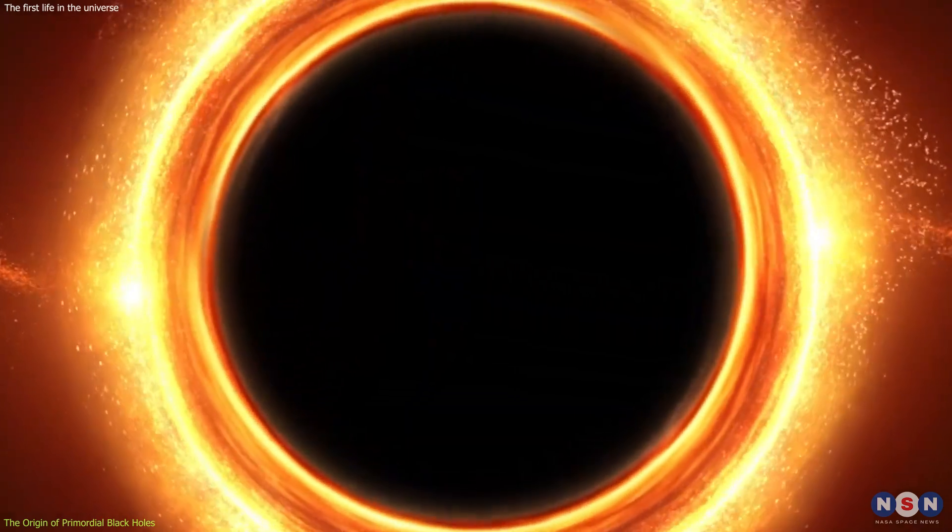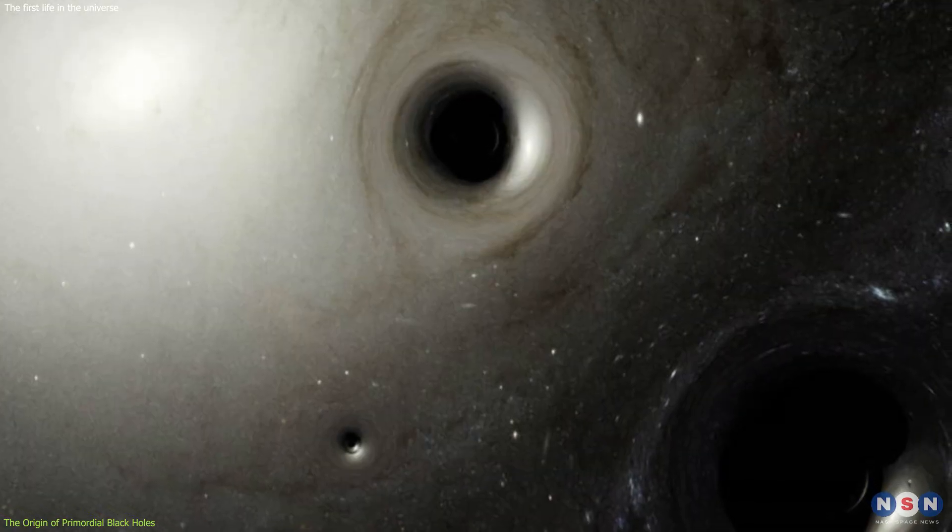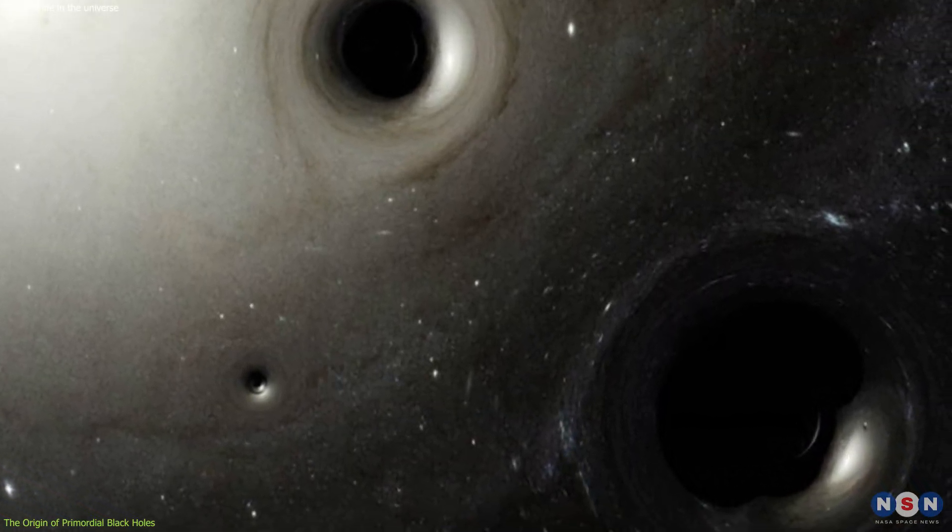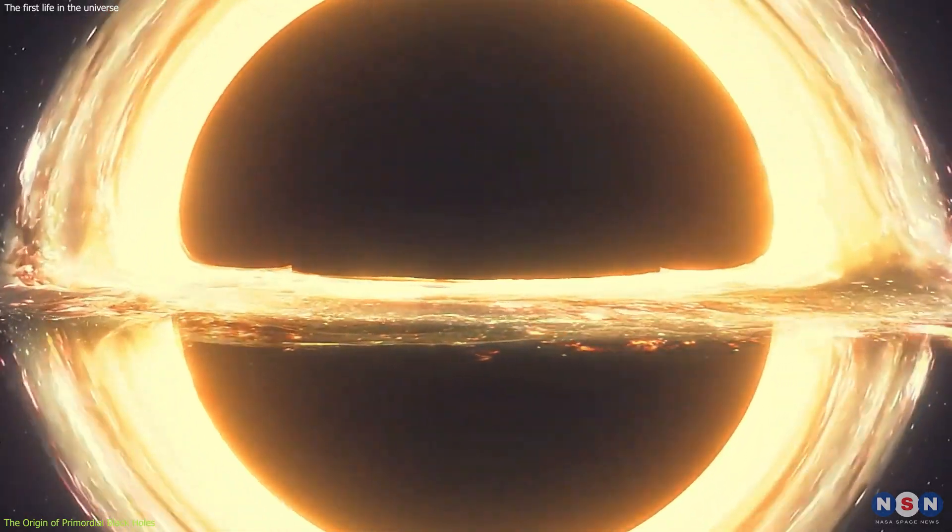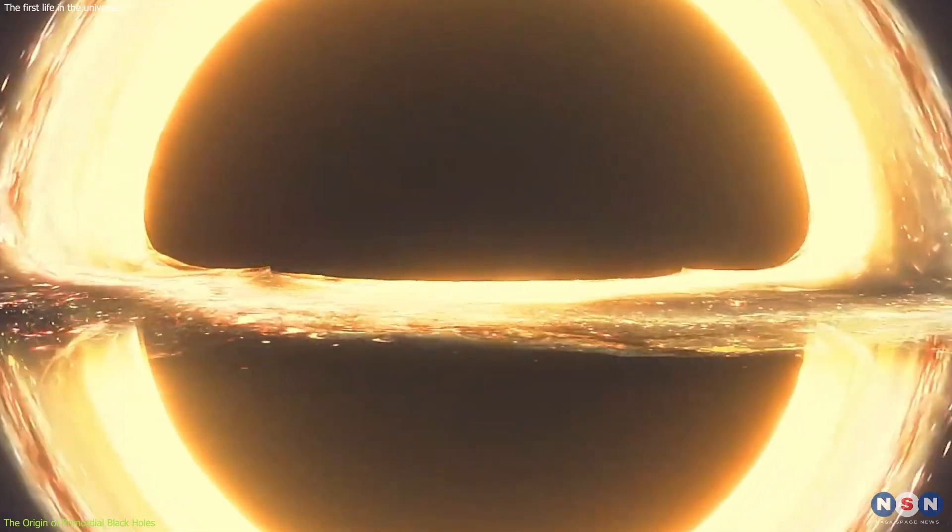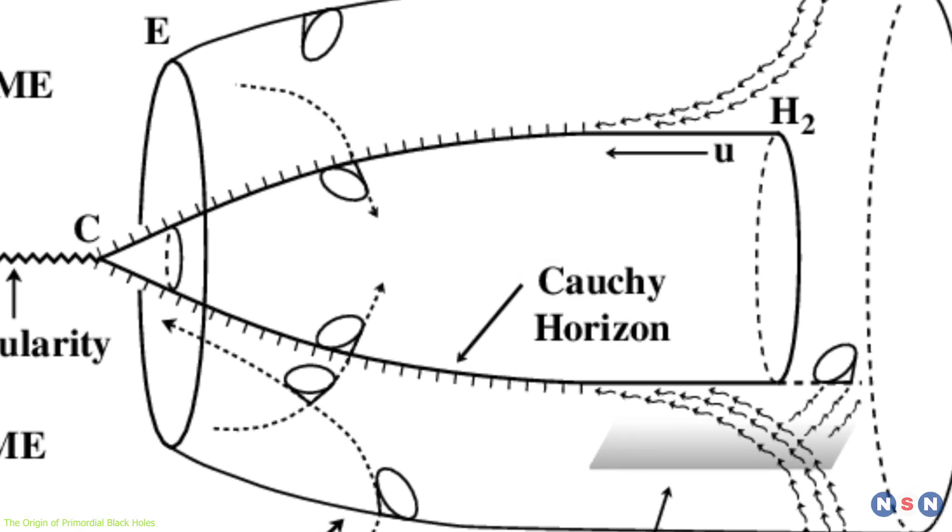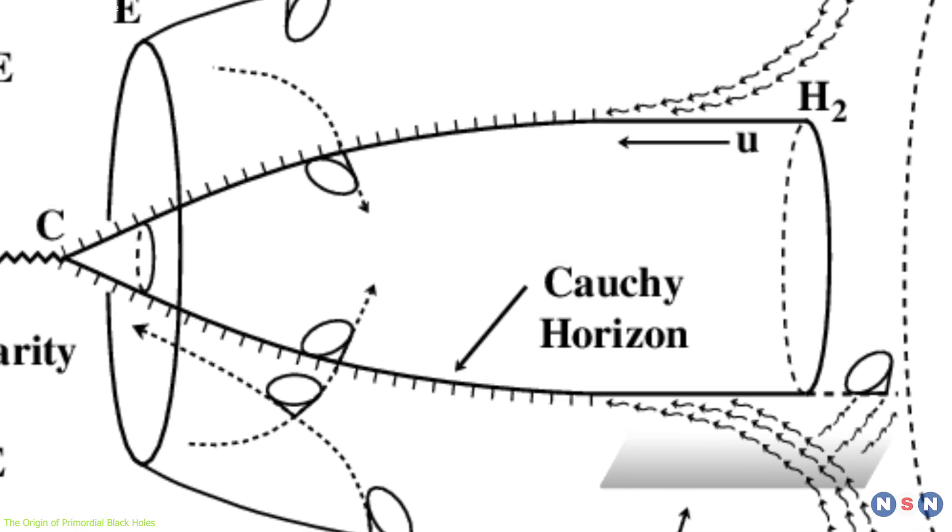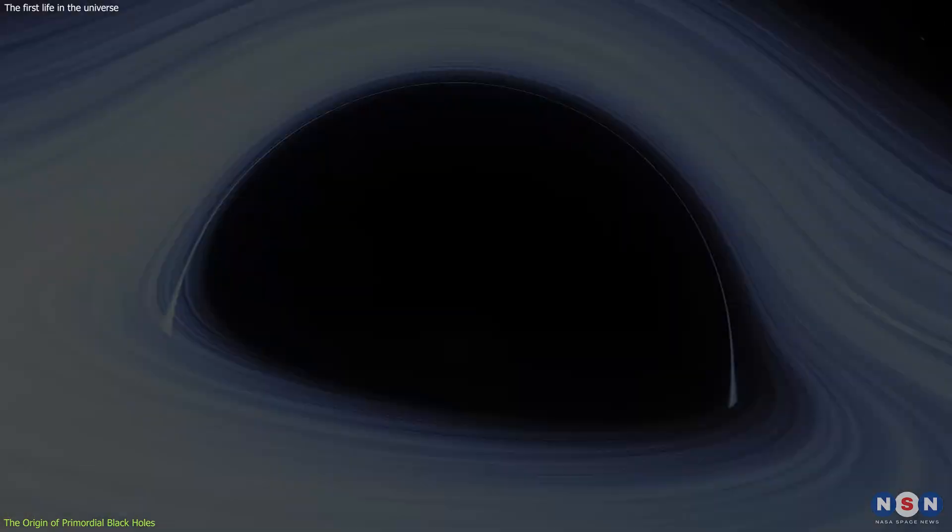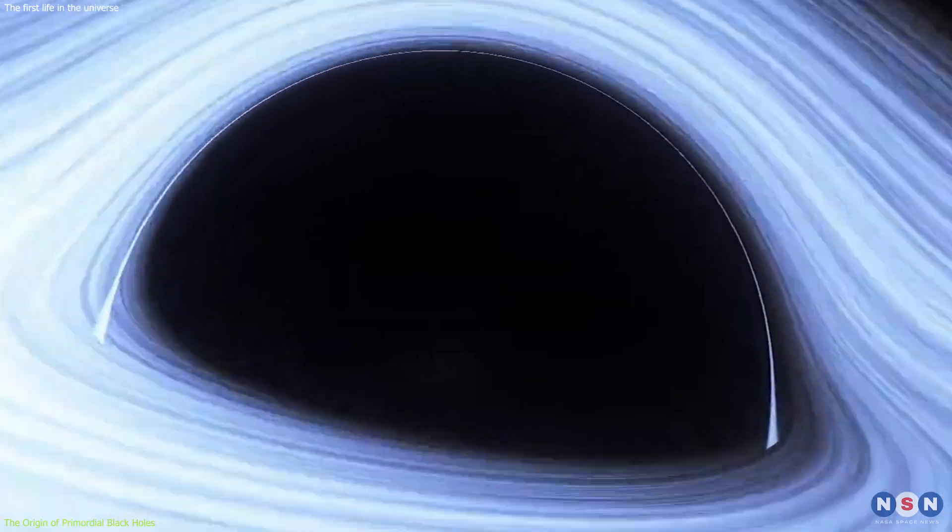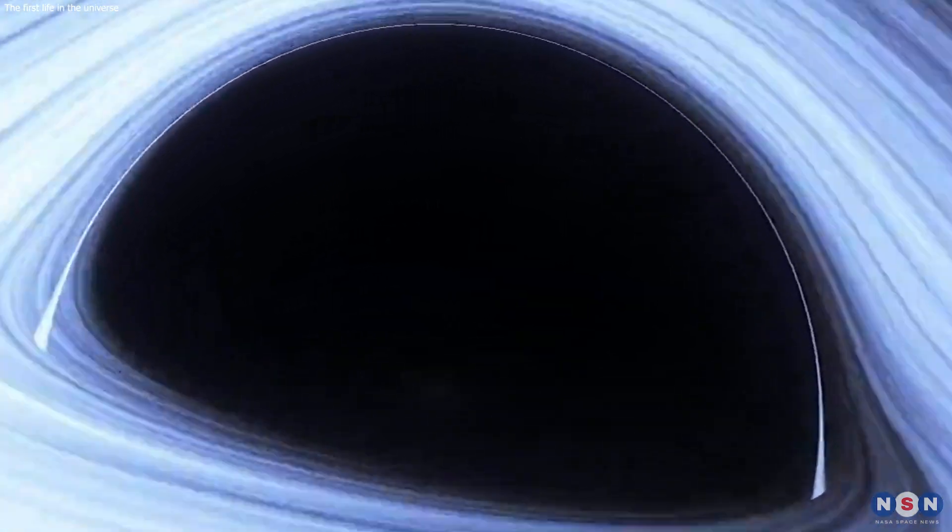But the idea of life inside black holes is based on the assumption that some of these primordial black holes are large enough and spin fast enough to create a habitable region inside them. This region is called the Cauchy Horizon, and it is the inner boundary of the black hole, where the laws of physics break down. In the next section, we will see how this region could host some of the first life forms in the universe.